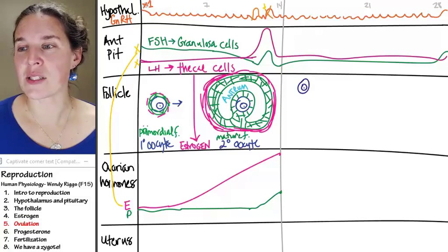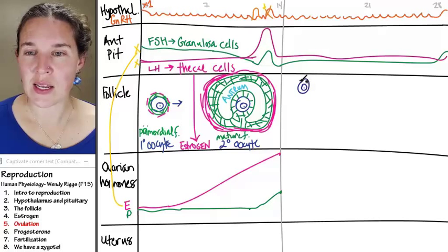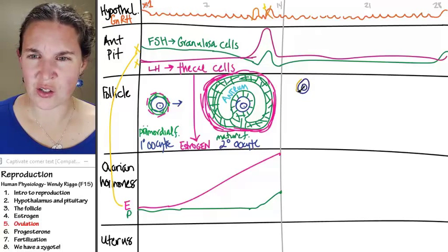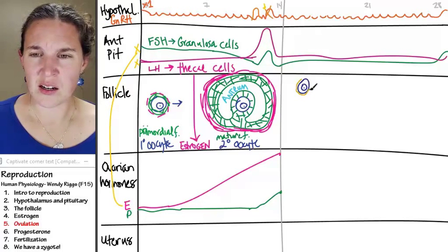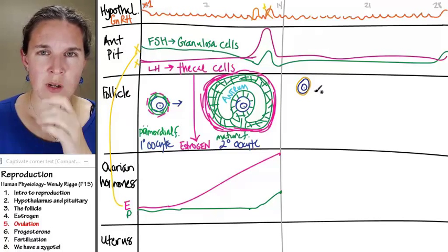My secondary oocyte is surrounded by a structure called the pellucidum, zona pellucidum.